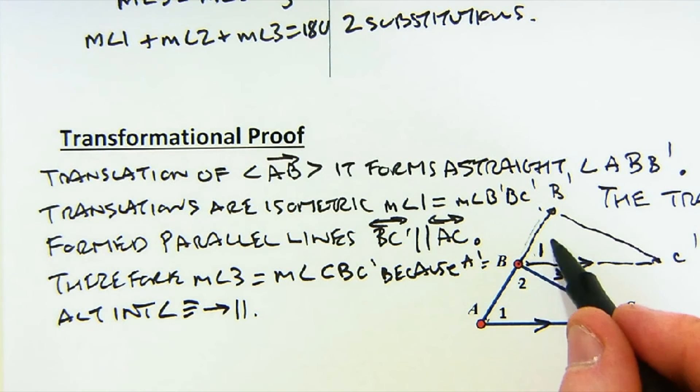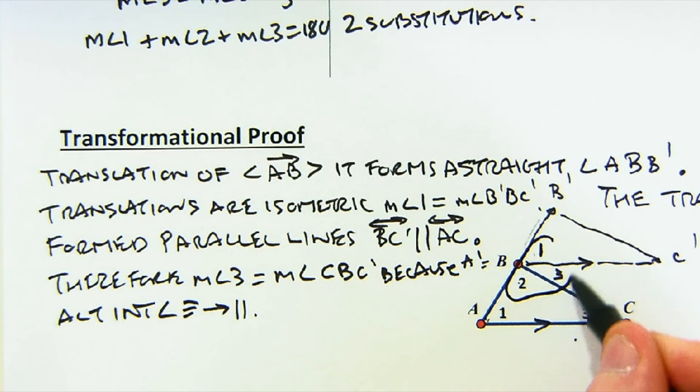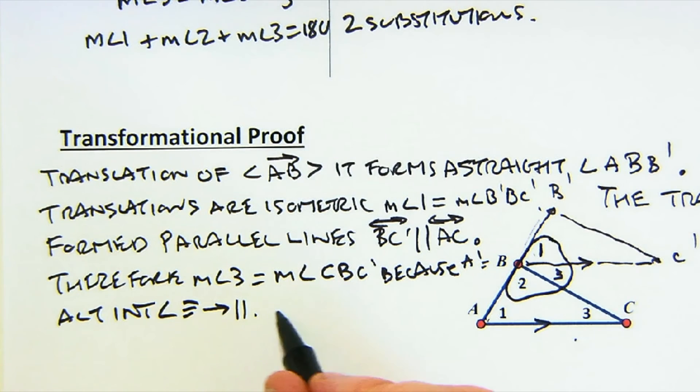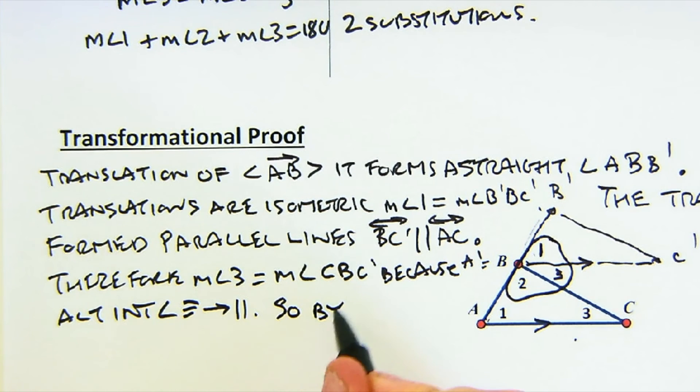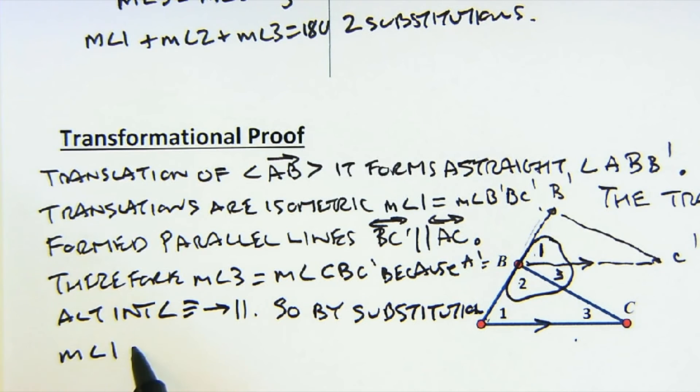And now you can see I have placed angle one, two, and three all there. So by substitution, the measure of angle one and the measure of angle two and angle three equals 180 degrees.